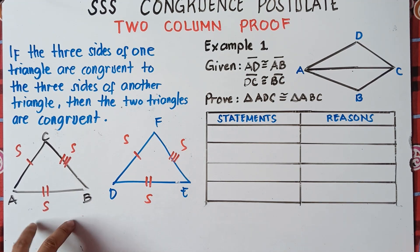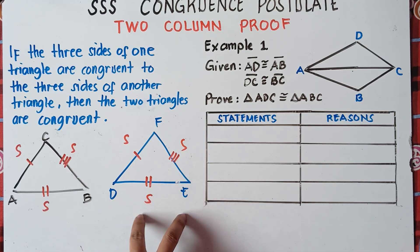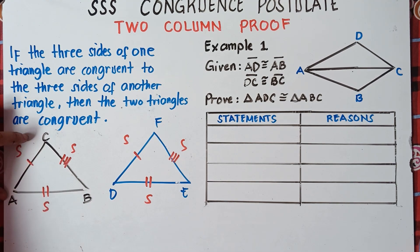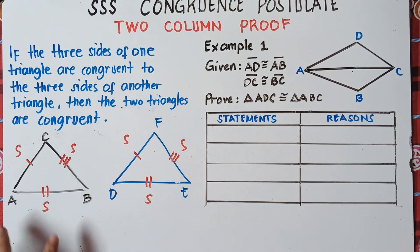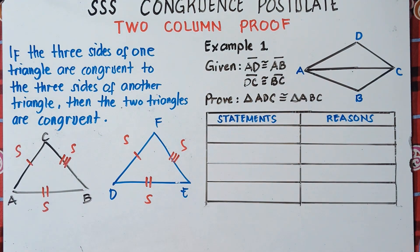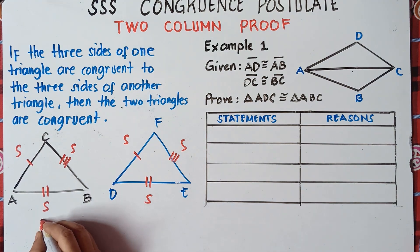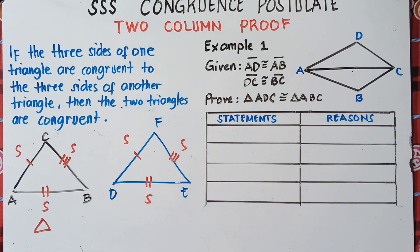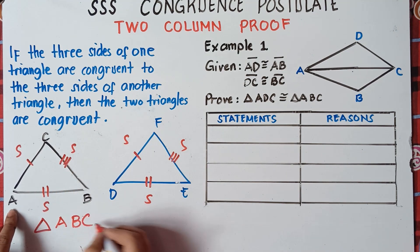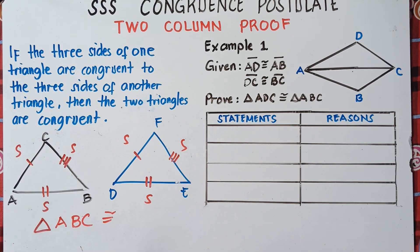If the three sides of this first triangle are congruent to the other three sides of this other triangle, therefore these two triangles are congruent. So AC is congruent to DF, AB is congruent to DE, and EF is congruent to BC. Therefore we can say that triangle ABC is congruent to triangle DEF. When you read the triangles, it should be symmetrical — if you read ABC, the other triangle you also read as DEF.